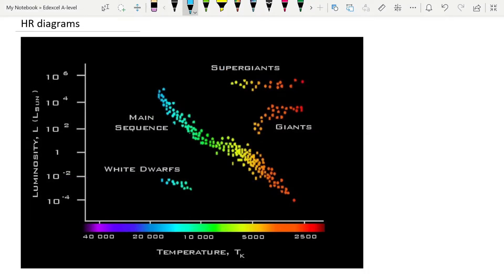The HR diagram was developed using stars of known luminosity and distance so that we can develop a pattern, and it's this pattern that we see here. We can then use this as a calibration curve. So if we know the temperature of the star, we can use Wien's law to find that temperature, and then we can just go up to the main sequence and across to figure out the luminosity.